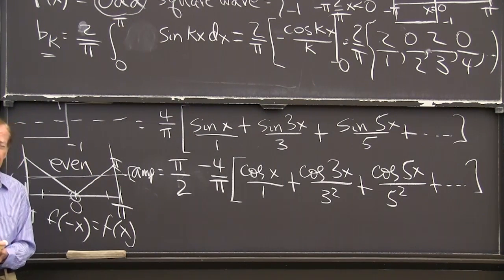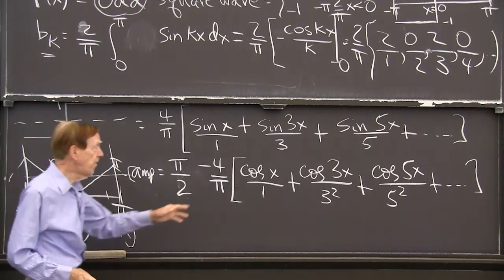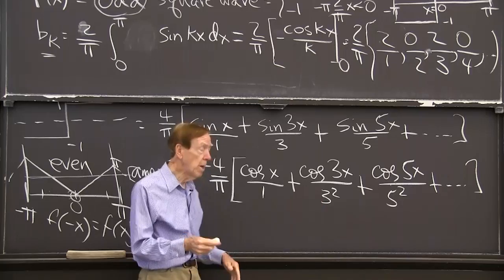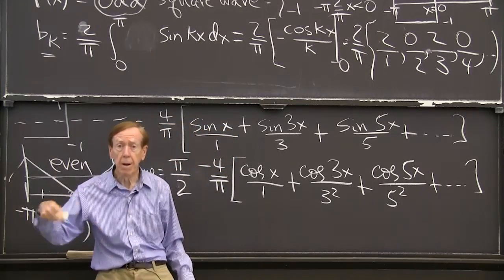Well, what do you see now? That's the other example I wanted you to see. You see a faster drop off, 1, 9, 25, 49, whatever. It's dropping off with k squared.